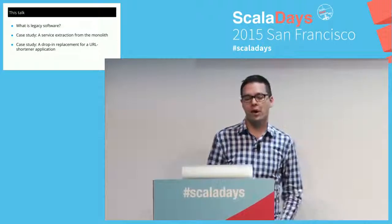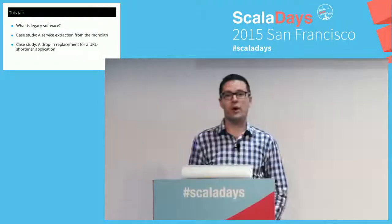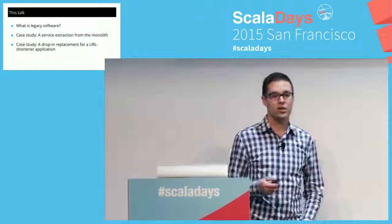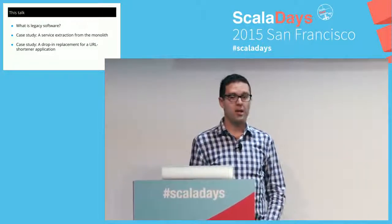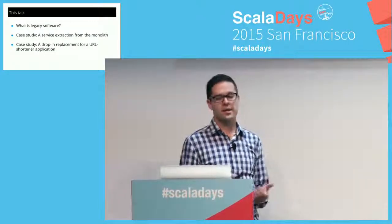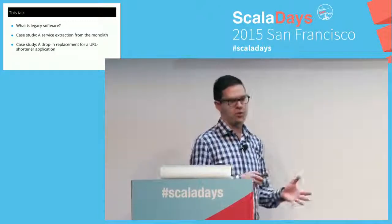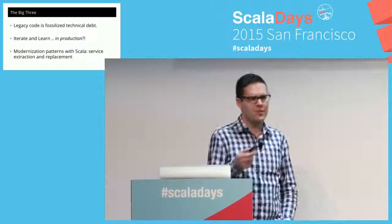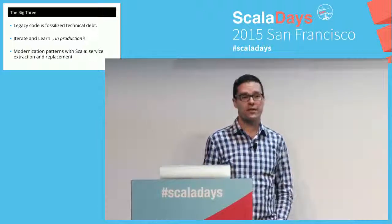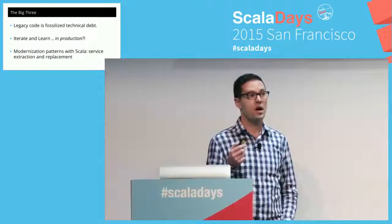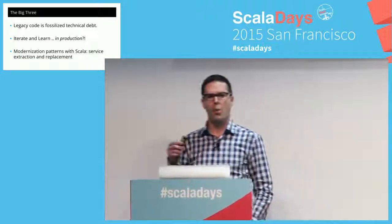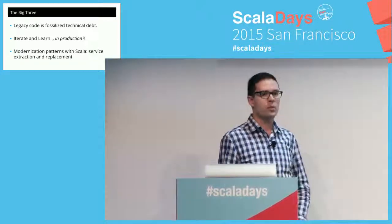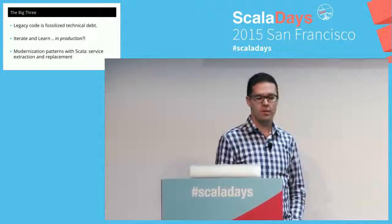I want to cover in this talk: legacy software and the legacy problem, and then two case studies — one where we extracted a service from our PHP monolith, and a case study of a drop-in replacement for an external service. If you take nothing else away from this talk: legacy code is fossilized technical debt. We want to iterate and learn in production, and we can modernize into Scala with modernization patterns.